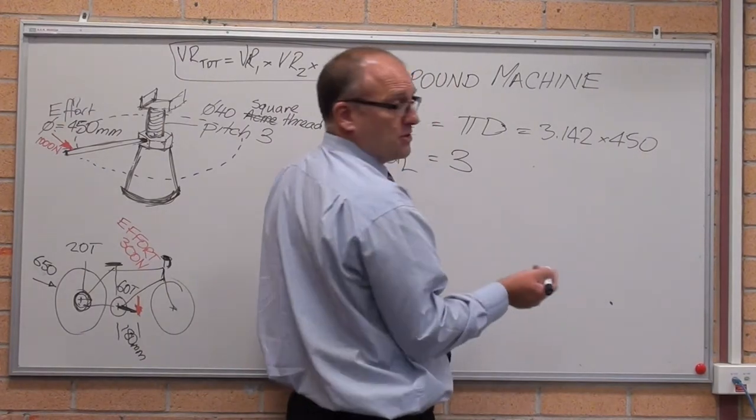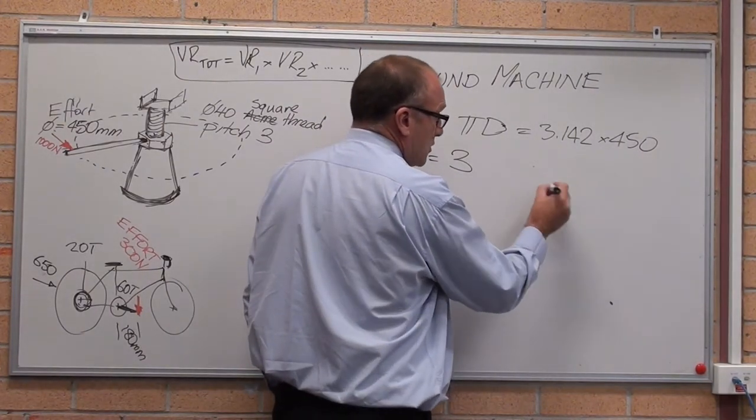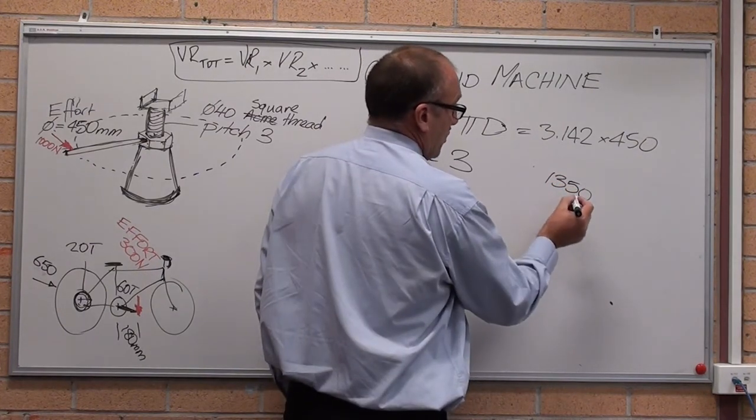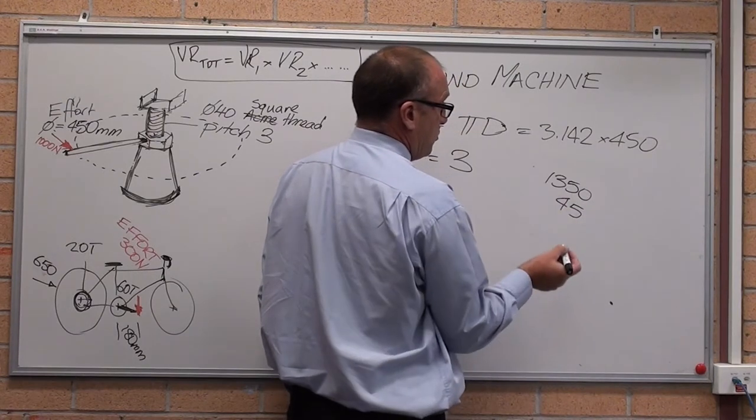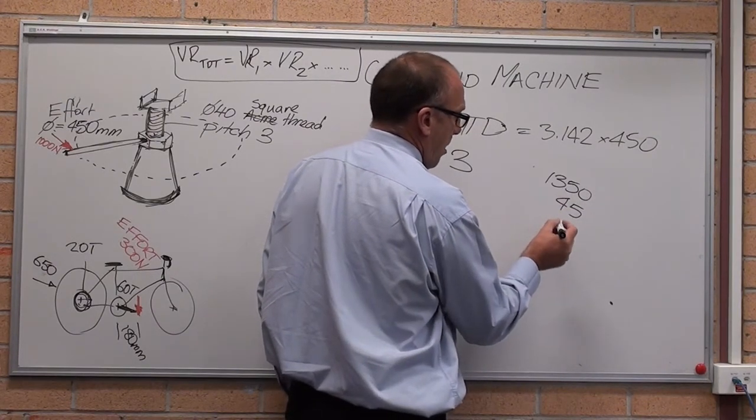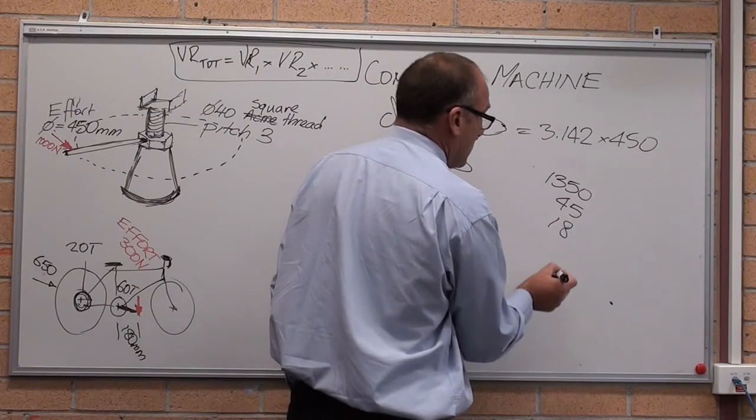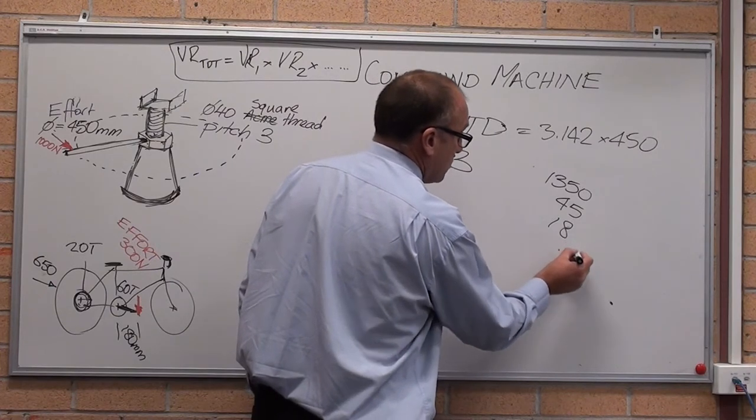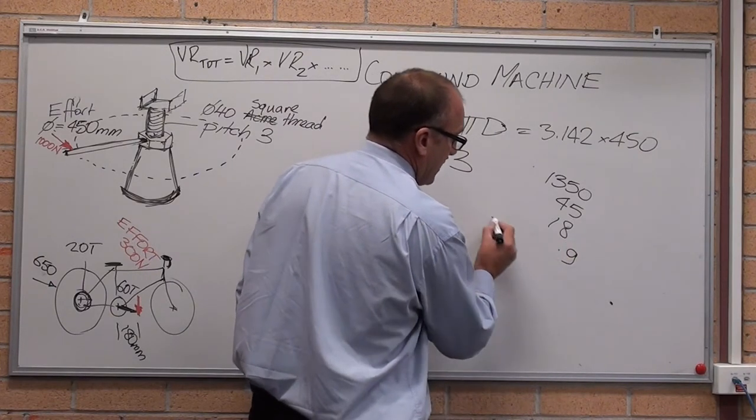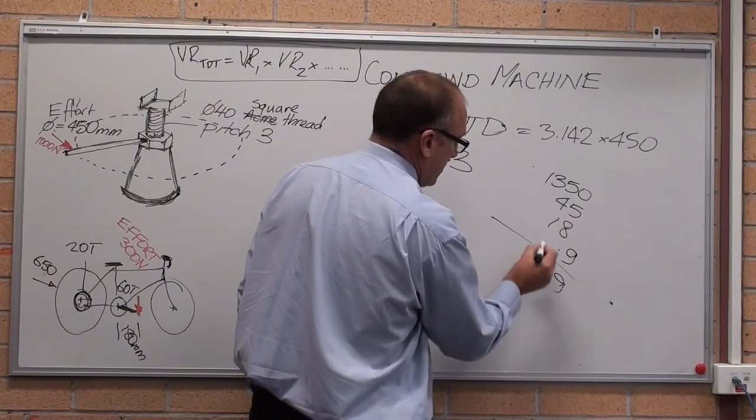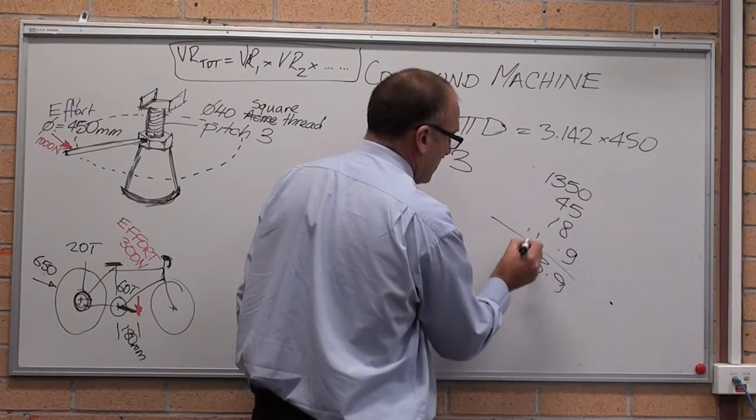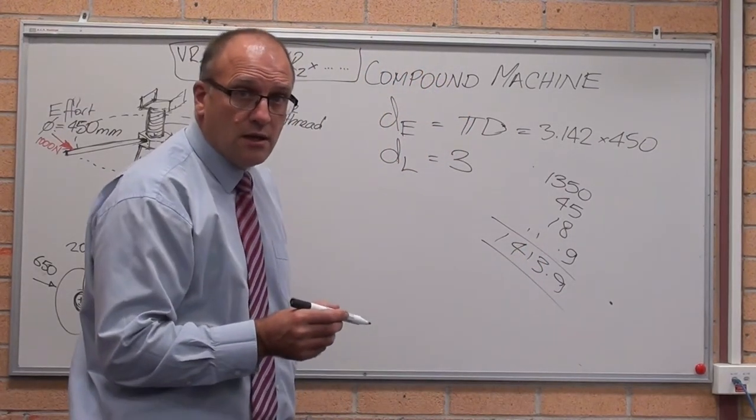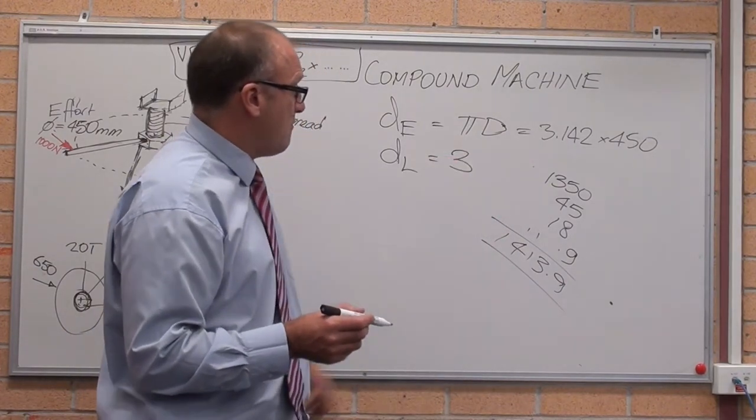3.142 times 450. 3 times 450, that's 1350. 1.1 times 450 is 45. 0.04 times 450 is 18. 9 and 9 is 18. 0.002 times 450 is 0.9. Add it all up, 0.9, 5 and 3, carry the 1, 10, 11, carry the 1, 4, 1. So it's 1414 millimeters for every three.